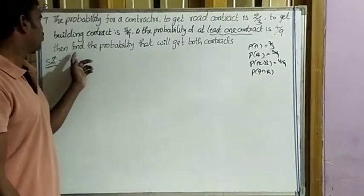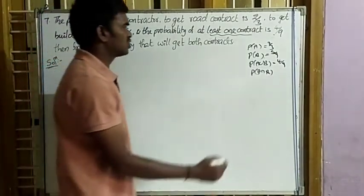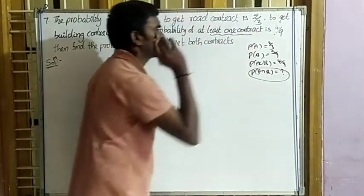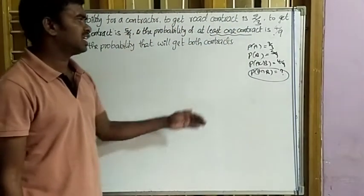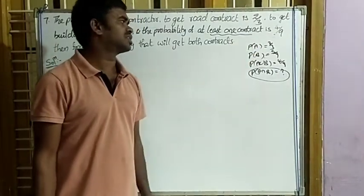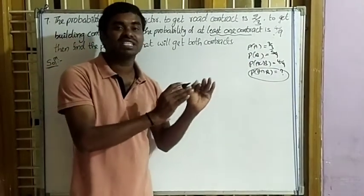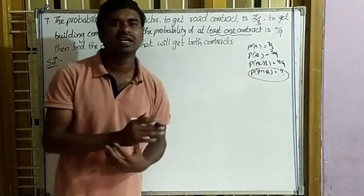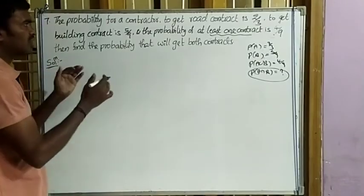What is asking: find the probability that we will get both contracts, so that is P(A∩B). We know the relation: P(A∪B) = P(A) + P(B) − P(A∩B). Using that formula we can get the answer.